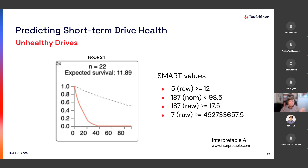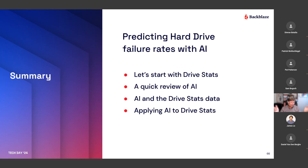So that's one of the ways you could use AI inside of Drive Stats — take the Drive Stats data that we publish on a regular basis and do something along these lines. We talked about Drive Stats, gave a little insight into it, talked a bit about AI, and spent some time walking through that model. There are probably about 40 different models out there built over the last four or five years, with different algorithms to predict drive failure. We looked at the Interpretable AI one — it's a pretty cool one. And that's how you can do it.